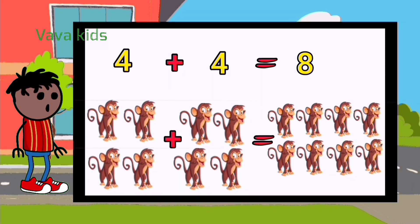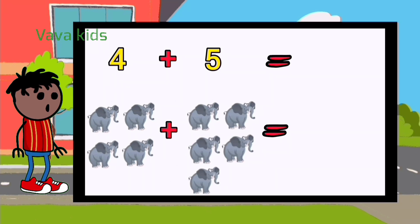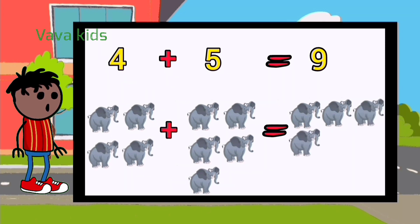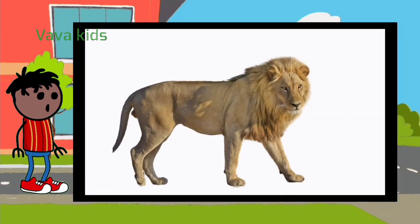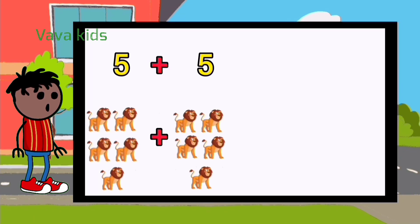Elephant: 4 plus 5 equal 9 — 1, 2, 3, 4, 5, 6, 7, 8, 9. Lion: 5 plus 5 equal 10 — 1, 2, 3, 4, 5, 6...